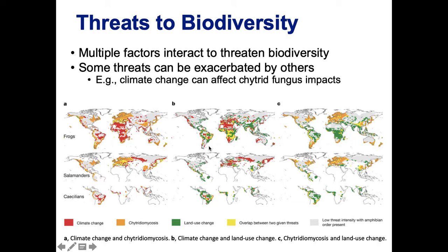Panel B shows the overlap between climate change and land use, where yellow again represents the overlap. There is some overlap for frogs in South America and Africa, a little in Asia for salamanders, and a little in South America. The final panel shows the overlap between chytrid and land use change, again with yellow indicating where species are dealing with multiple threats simultaneously.